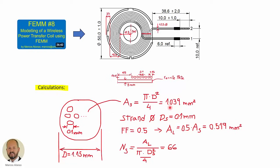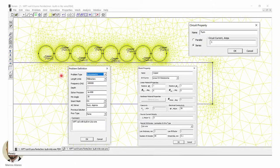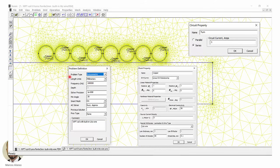So the total area that we have for each turn is this value here, 1.04 square millimeters approximately. And since the diameter of each strand is 0.1 millimeter, and considering a fill factor of 0.5, the available area that we have for the Litz strands is this value here, 0.52 square millimeters. So now dividing this available area by the area of each strand, we get a number of 66 strands.